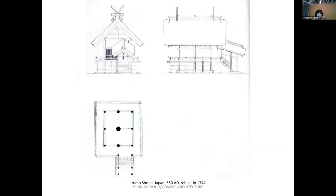Looking back at history: all Western churches are nine-square because you enter the center and walk down the nave. But comparing to Asian buildings — Japanese or Chinese — ancient buildings are mostly four-square, related to timber structure rather than stone construction.